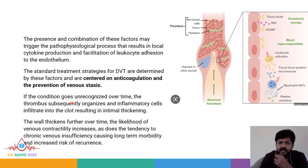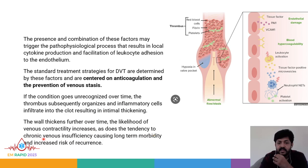If this condition goes unrecognized over time, the thrombus subsequently organizes and inflammatory cells infiltrate into the clot, resulting in intimal thickening. The valve thickens further over time and the likelihood of venous contractility increases, as does the tendency to chronic venous insufficiency, causing long-term morbidity as well as increased risk of recurrence.